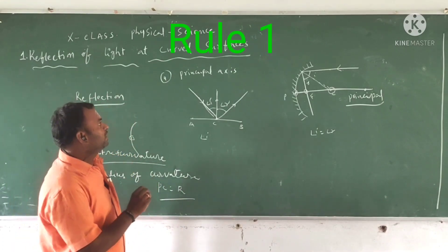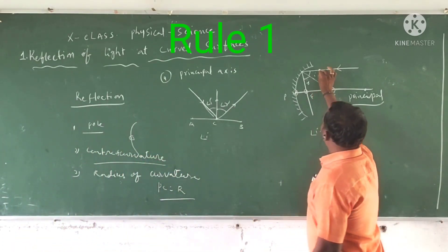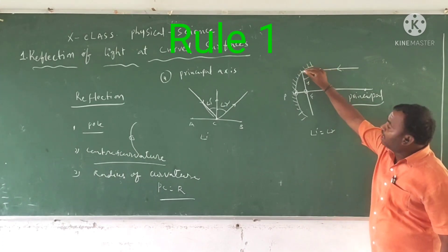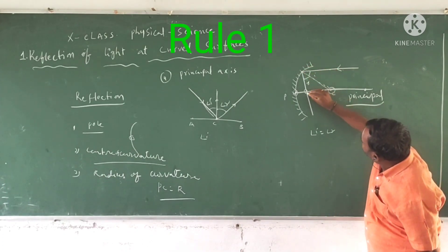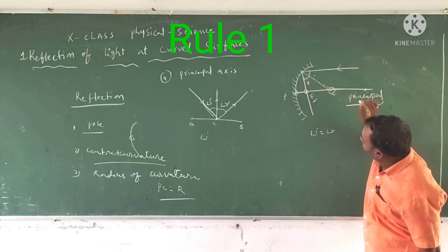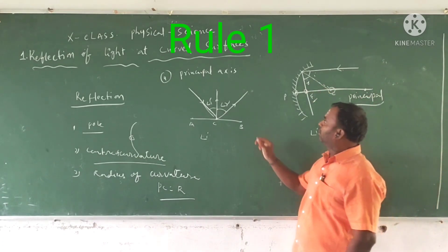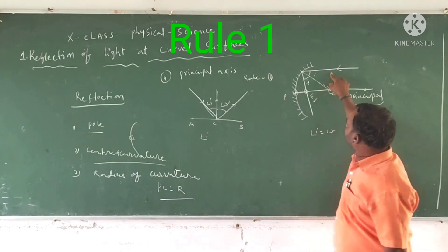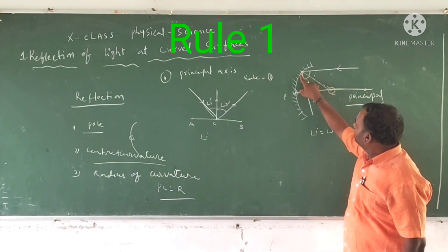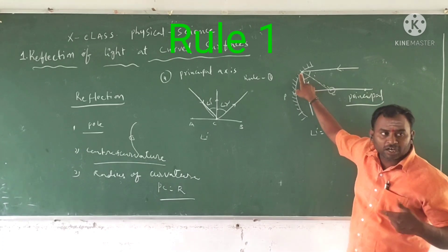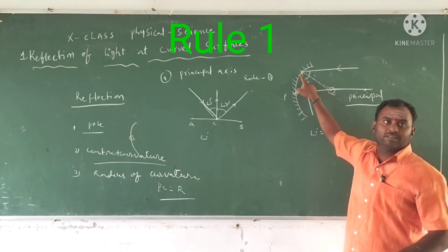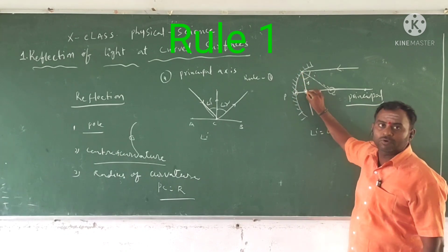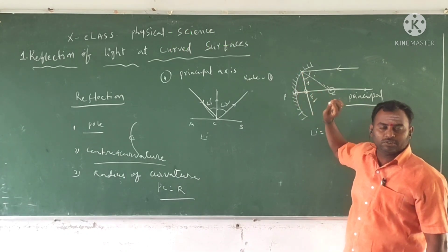We notice four rules. Rule one: any ray parallel to the principal axis, after being incident on a concave or convex surface, after reflection it passes through the focus. This is rule one.